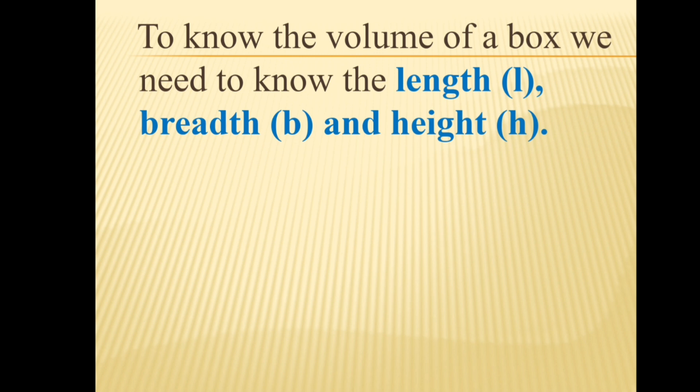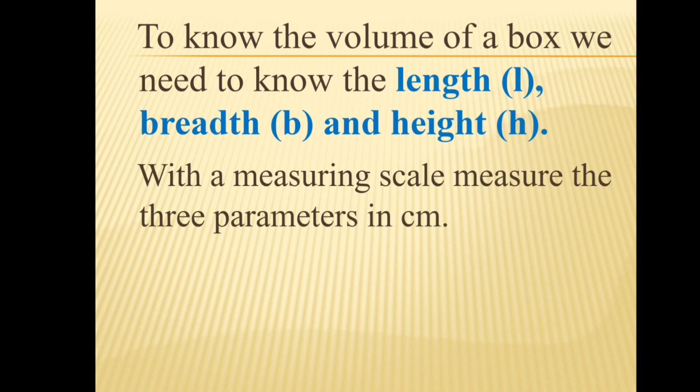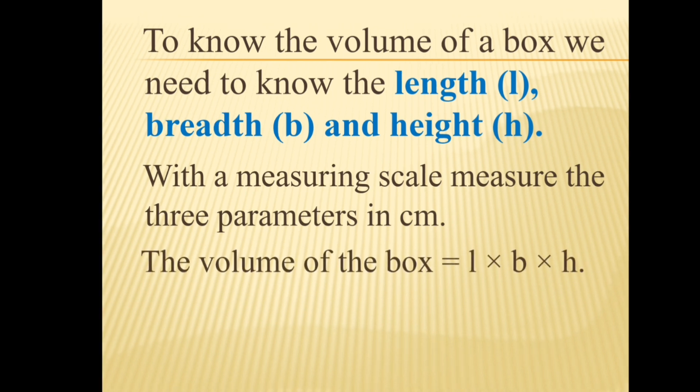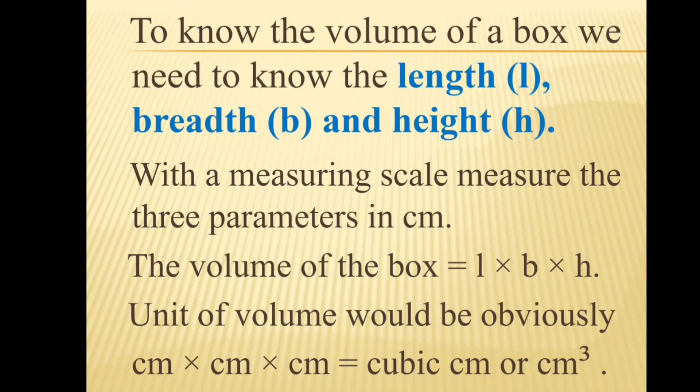Length is the extent of something measured from end to end. Breadth, also called width, is the extent measured from side to side. Height is the high point or peak. Measure all three parameters in centimeters using a measuring scale. The volume of a box equals length times breadth times height. The unit would be centimeter × centimeter × centimeter, which is cubic centimeter, or centimeter cubed.